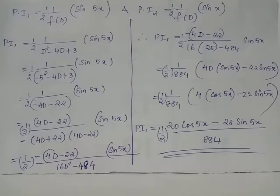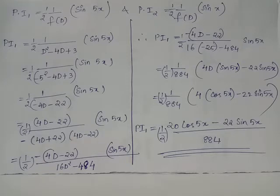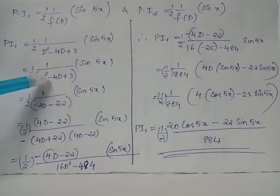Evaluating PI1 = (1/2)·[1/(D² - 4D + 3)]·sin5x. Since the input is a trigonometric function of the form sin(ax), we replace D² with -a², where a is the coefficient of x inside the sine function. Here a = 5, so D² is replaced by -25.